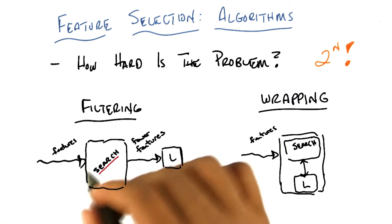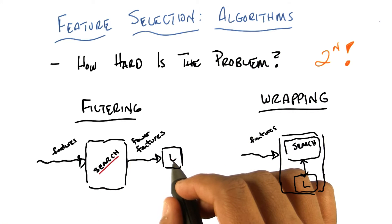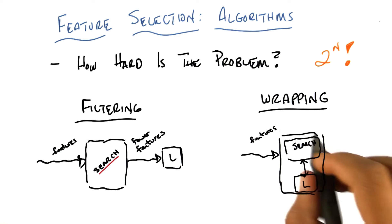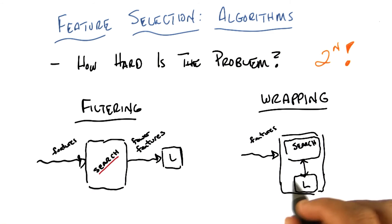So this is called filtering because this is a process that filters the features before handing it to a learning algorithm. And this is called wrapping because the search for the features is wrapped around whatever your learning algorithm is. You see that?